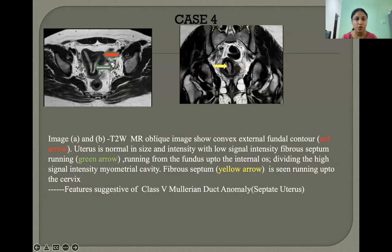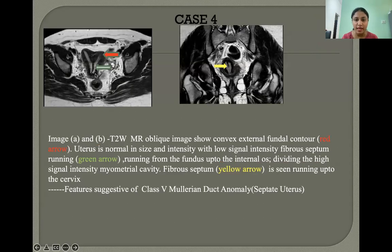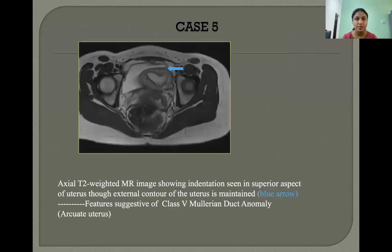Case 4: T2 MR oblique images A and B show a convex external contour of the fundus. The uterus is normal in size and signal intensity, with a low signal intensity fibrous septum running from the fundus up to the internal os, dividing the high signal intensity endometrial cavity. The fibrous septum is seen running up to the cervix. These features are suggestive of class 5 Mullerian duct anomaly, septate uterus.